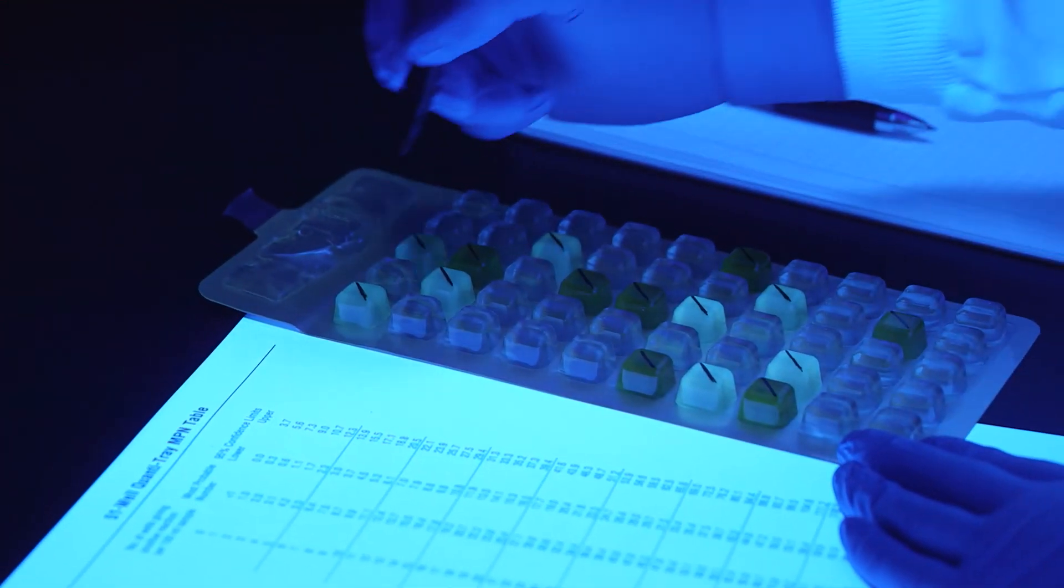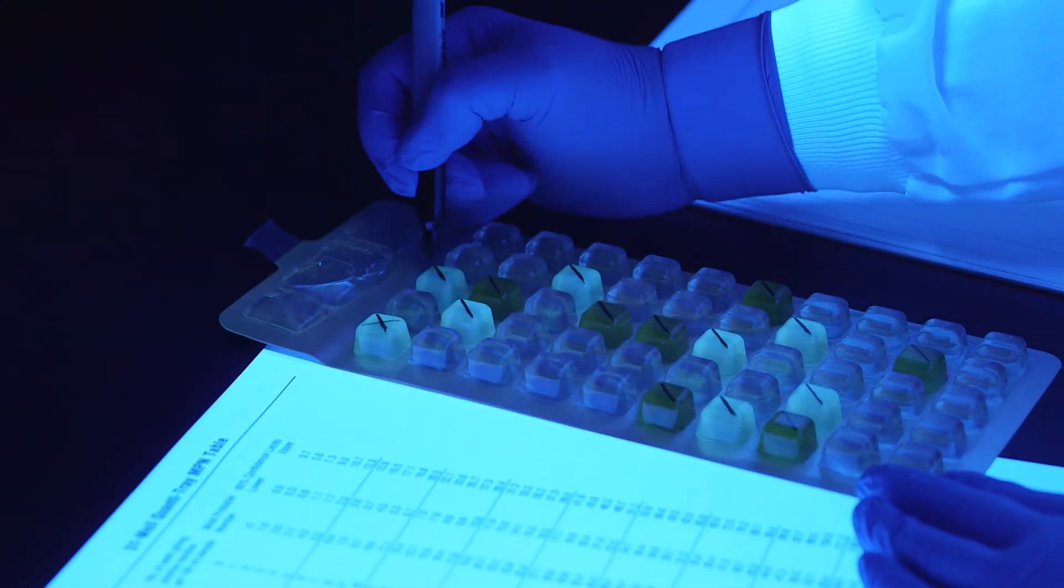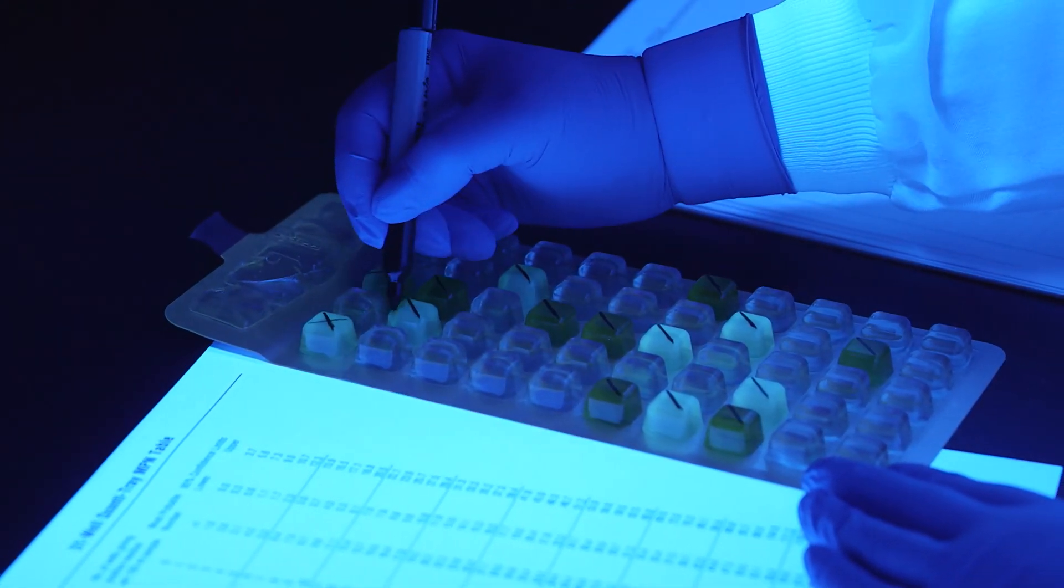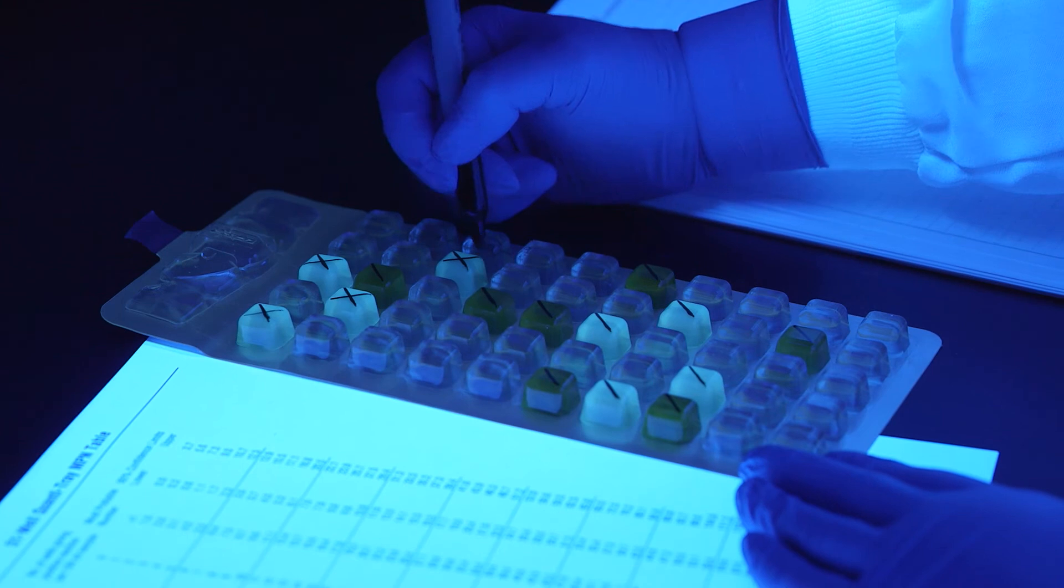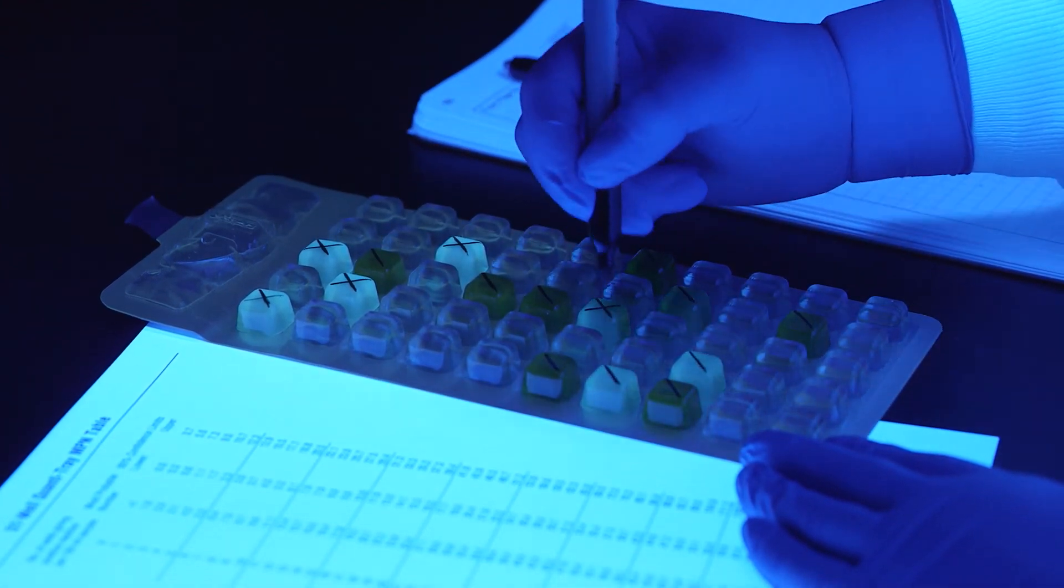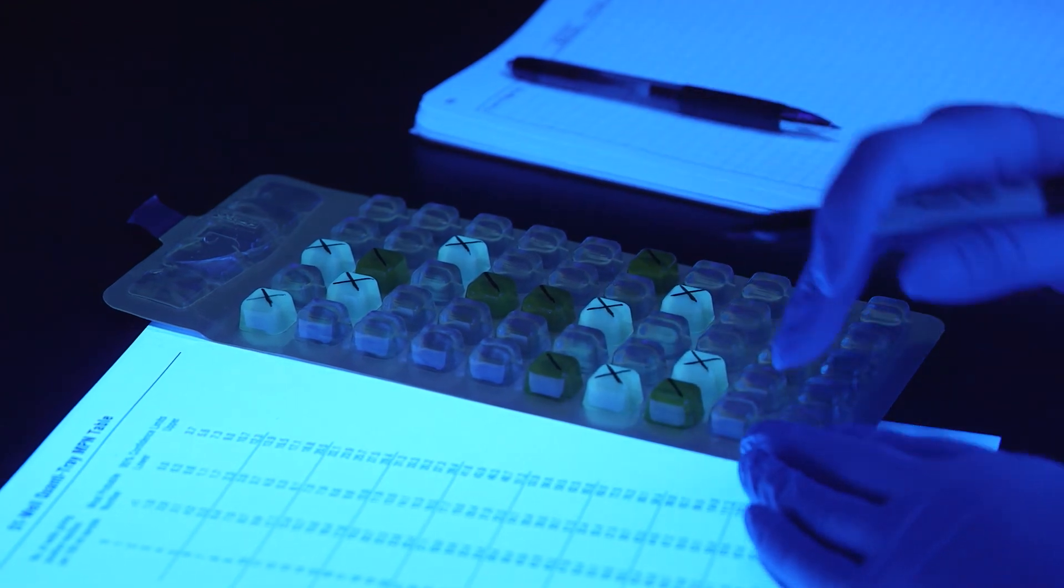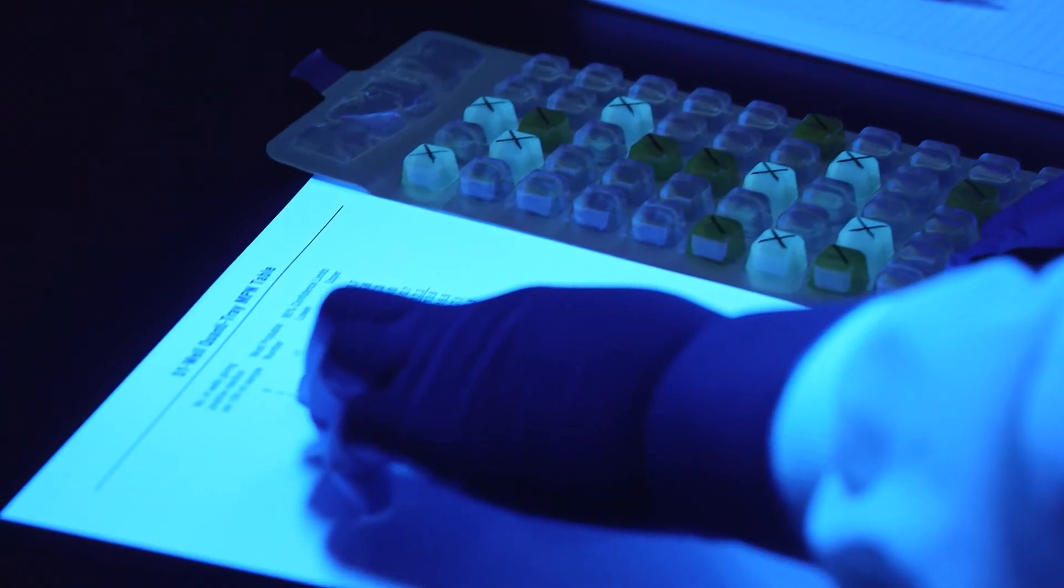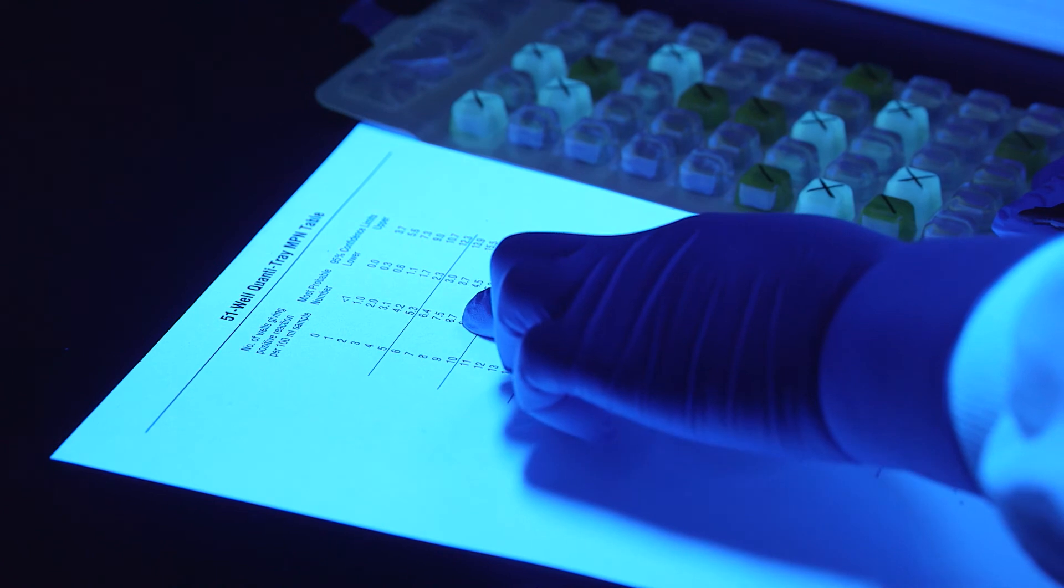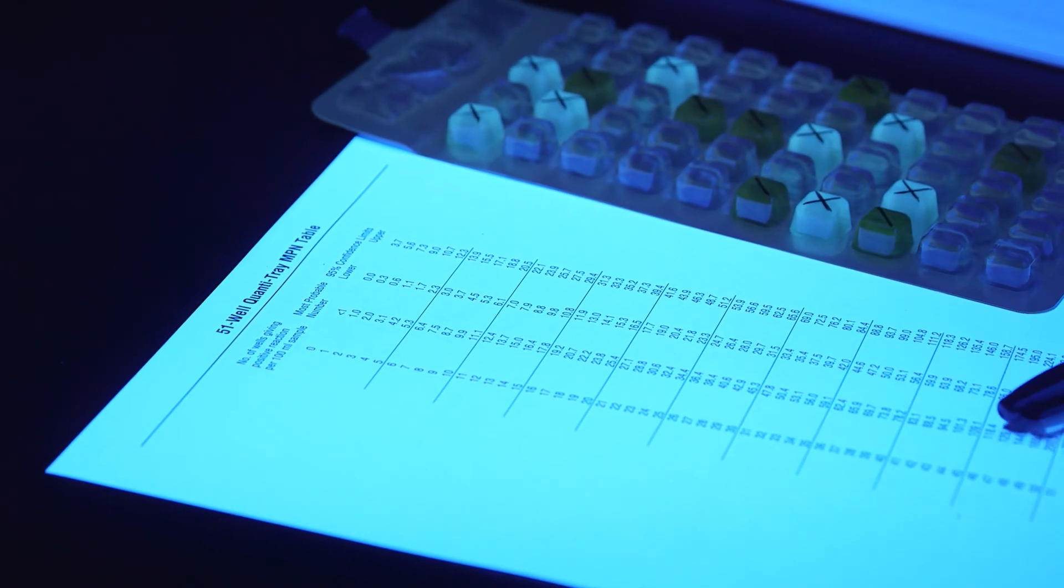To determine the number of E. coli view the Quantitray with a UV lamp in a dark environment shining the light away from your eyes. Keep the light within 5 inches of the tray, count the fluorescent wells that are equal to or greater than the comparator and then refer to the MPN table. The most probable number of E. coli for this example is 8.7 per 100ml.